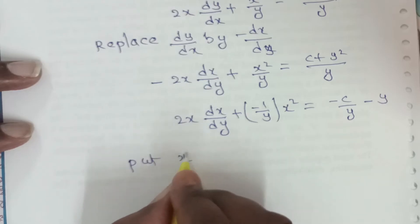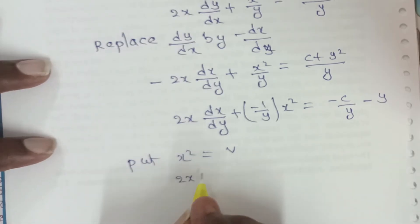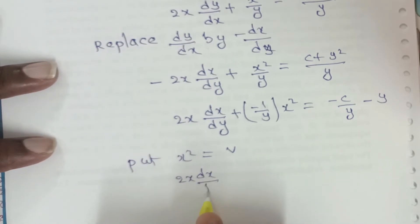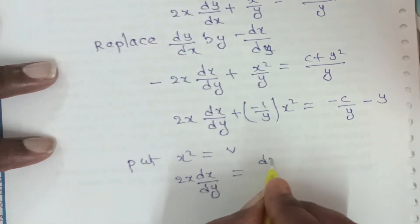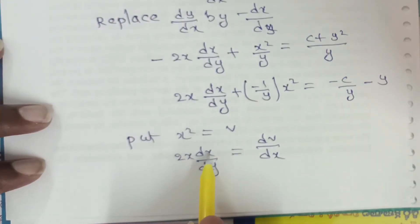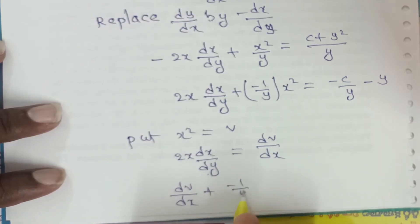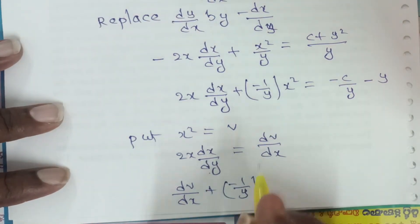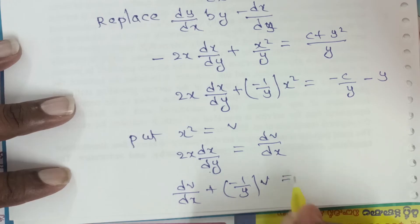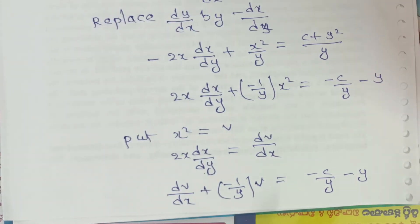Put x² = v. Then 2x·(dx/dy) = dv/dy. Substituting: dv/dy - (1/y)·v = -c/y - y. This is a linear differential equation of the first order.